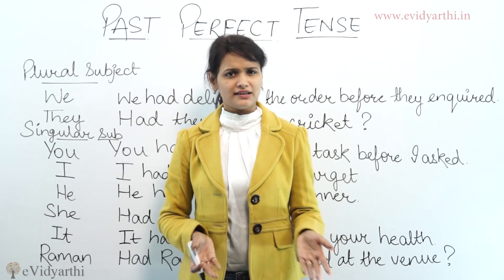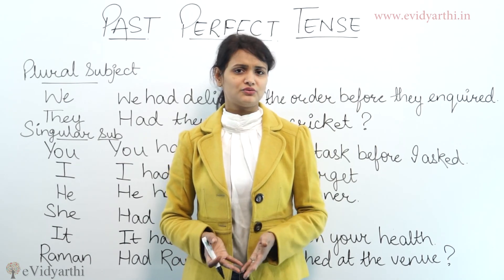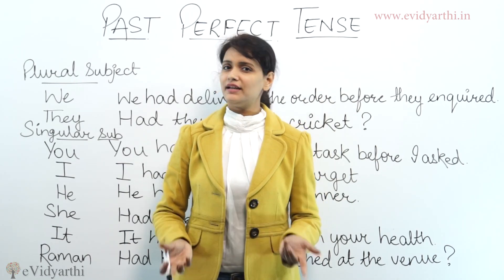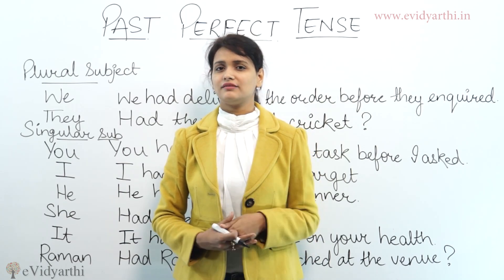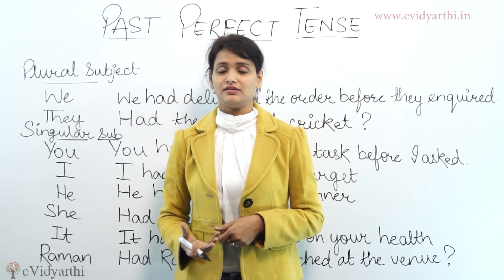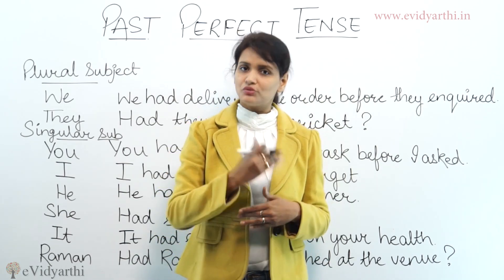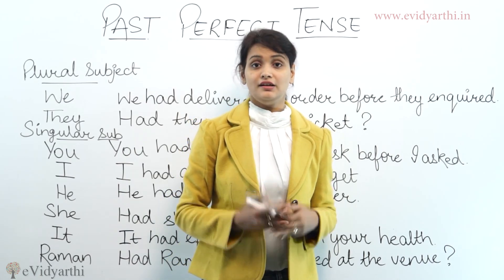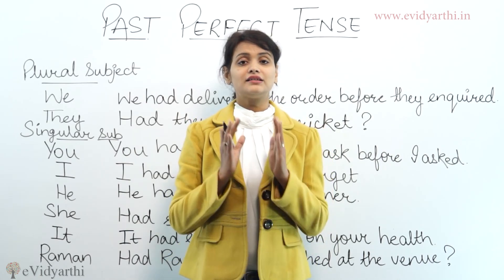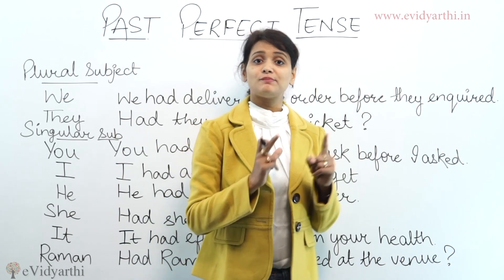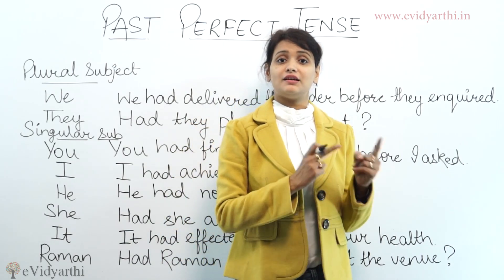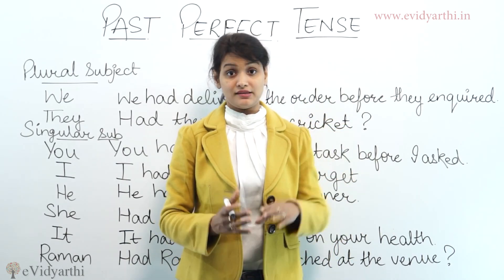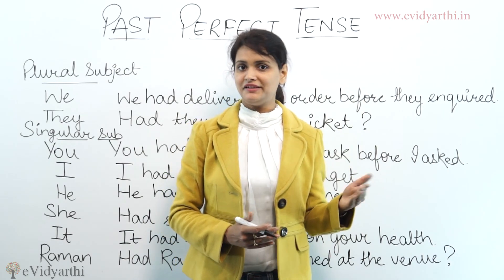For example: 'I met yesterday' or 'I was there yesterday' — that actually happened recently. But 'I had gone there two days earlier' — this actually happened a little more earlier, two days earlier. So that gives us a sense that past perfect tense is something that happened in the past and finished in the past even more earlier.